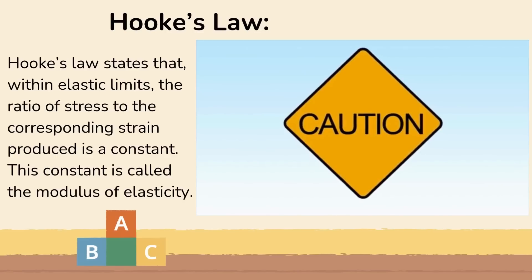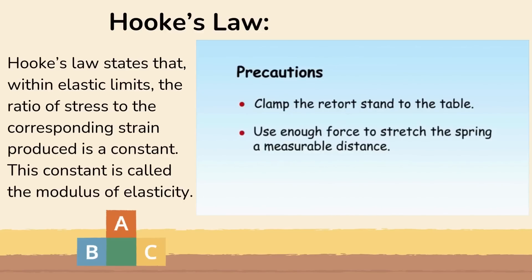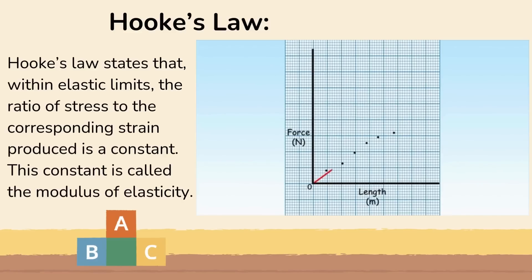Some precautions you will need to take include clamping the stand to the table so that it does not fall over. Use enough force that the spring stretches a measurable amount, but not so much that its elastic limit is exceeded and it becomes permanently stretched and damaged. On the graph, plot force compared to displacement: force is on the y-axis and displacement is on the x-axis. This line should be straight through the origin of the graph. When the line starts to curve or misshape, the elastic limit of the spring has been exceeded, meaning the spring has stretched too far and no longer follows the rules of Hooke's law.